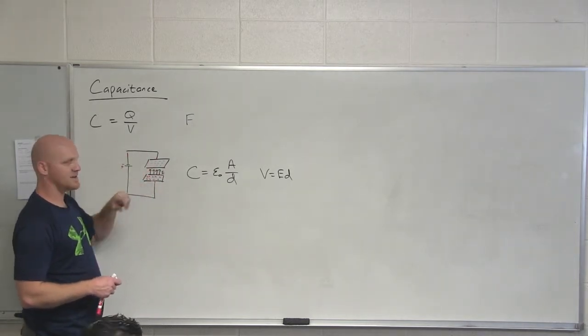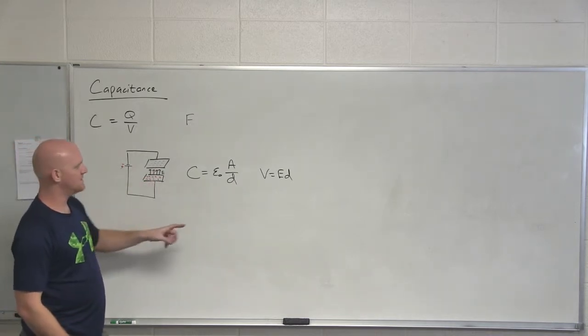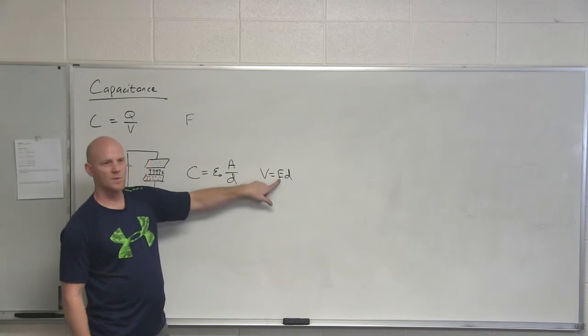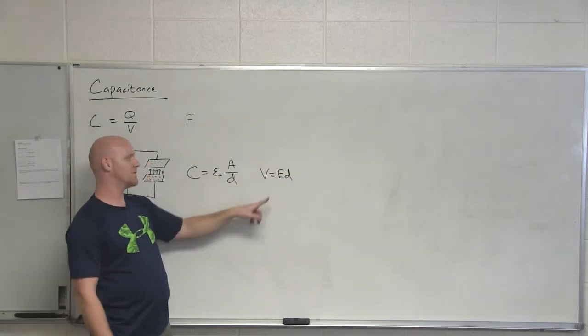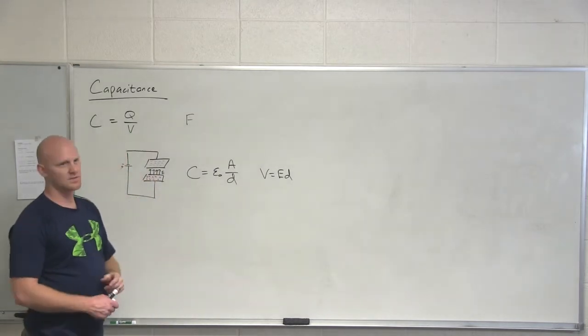But everywhere in the interior, the electric field is everywhere the same, pointing from the positive plate to the negative plate. Cool. And so if you know the voltage applied and the distance of separation, you can figure out what that electric field would be. Or if you know the electric field and the distance, you know what voltage was applied across, and vice versa. So I give you any two of these three, you can solve for the third one.